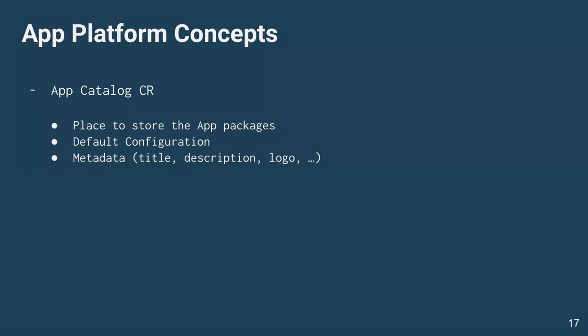So what are the concepts of the platform? First, we created a custom resource called the App Catalog. The App Catalog is a representation — a collection of package definitions. It's where we define the first level of configuration: you can define some default values in your App Catalog CR that will be applied to all apps in this catalog. For example, you can define the registry that will host all applications in the catalog by default. You can also define metadata like the title, description, and logo, which is useful for providing more information to users.